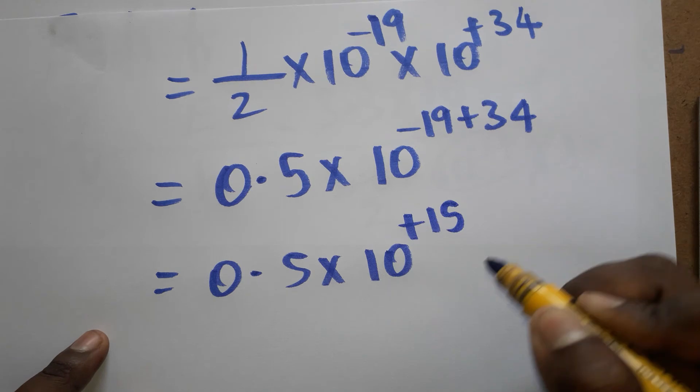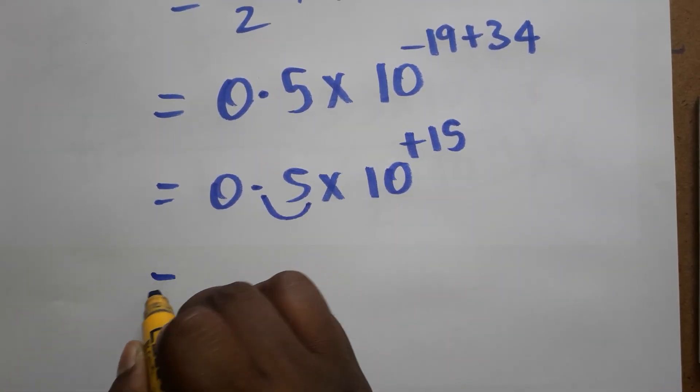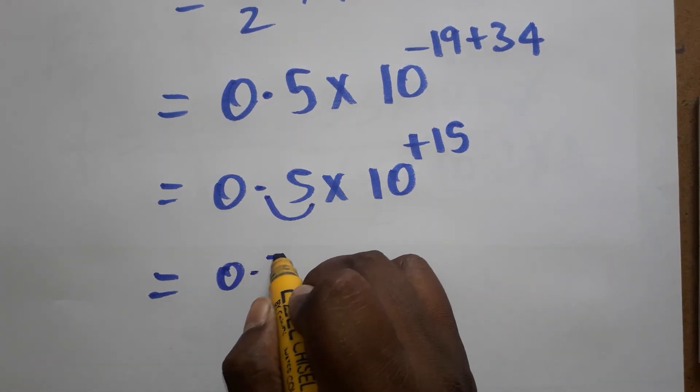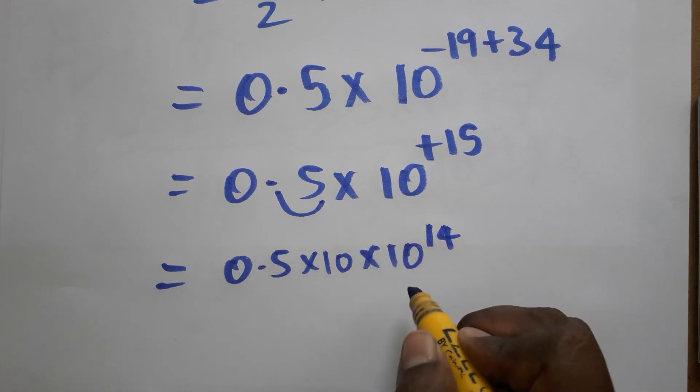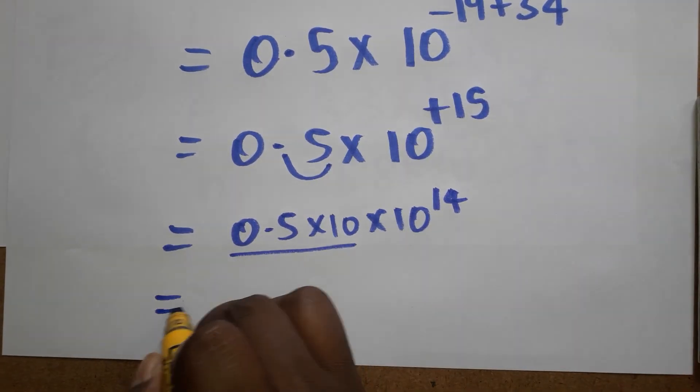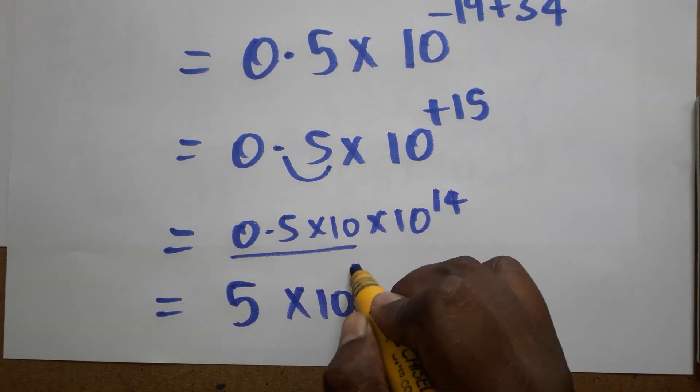Here I am going to remove one decimal. For the final answer we can write as 0.5 × 10 × 10^14, we can write like this. 10 × 0.5 will get as 5 × 10^14 hertz.